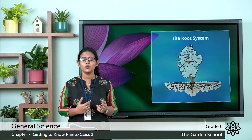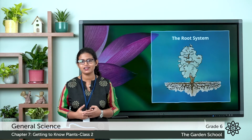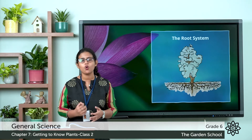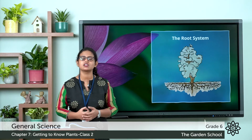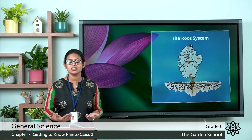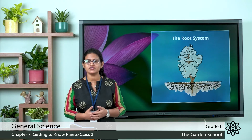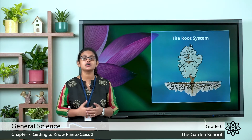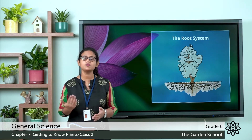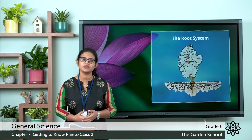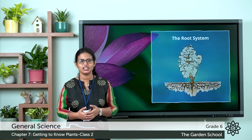So that is one of the main functions of roots. What is the next one? The root absorbs water and minerals from the soil. Plants need water and food to live, and it is the root that absorbs water and nutrients from the soil.